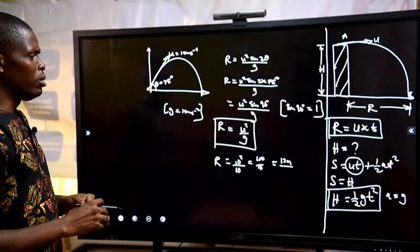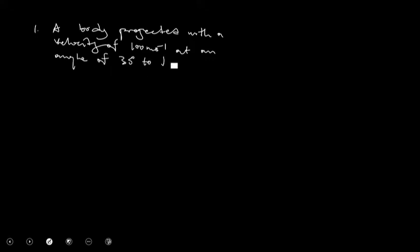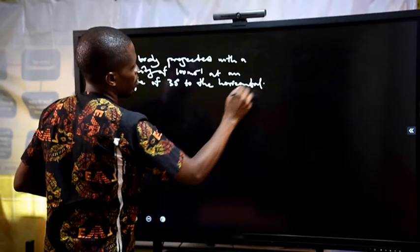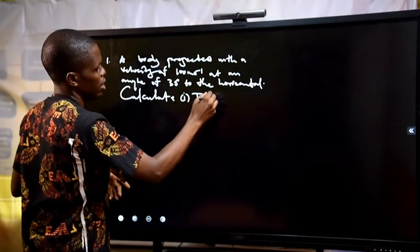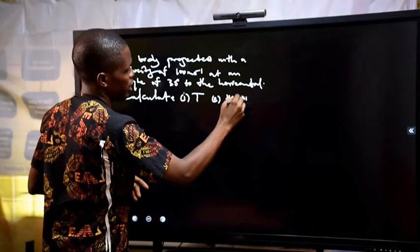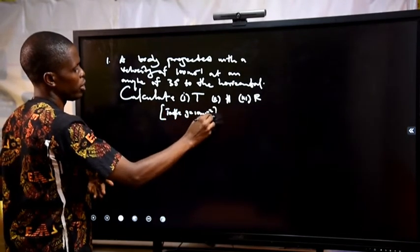Let's solve a problem. A body is projected with a velocity of 100 m/s at an angle of 30 degrees to the horizontal. Calculate: (i) the time of flight T, (ii) the maximum height h, and (iii) the range r. Take g = 10 m/s².